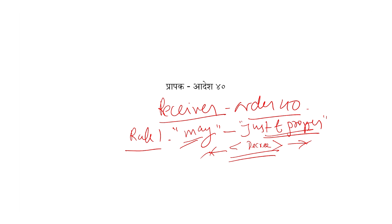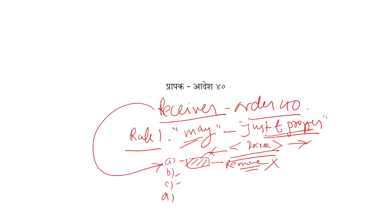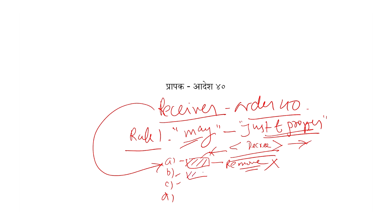Receiver ka kaam kya hoga — receiver ke kaafi kaam hain. Point A: agar koi banda pehle se us property pe kaabiz hai, toh isko remove kar diya jayega aur receiver ko appoint kar diya jayega. Receiver isme se jo bhi proceeds nikalenge, receiver rakhega — isko remove kar diya jayega. Dusra: is receiver ko isme possession dilwa diya jayega — isko hatana aur receiver ko isme possession dilwana. Tisra: receiver ko kuch powers diye jaayenge.